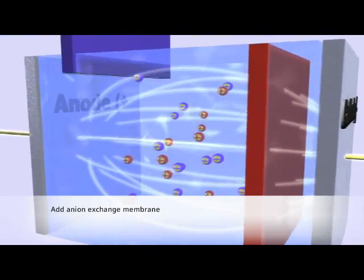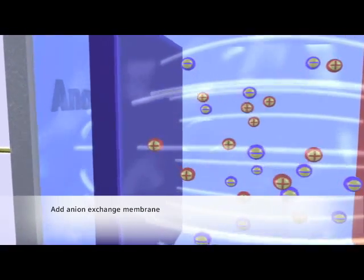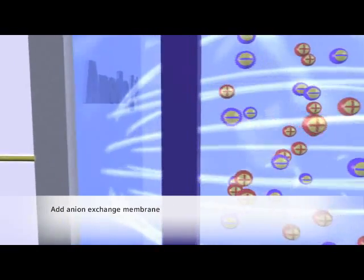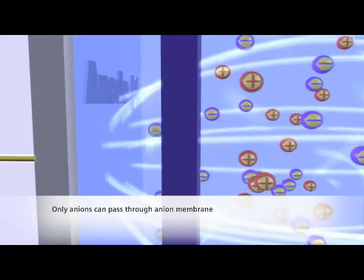When we insert another ion-exchange membrane, this time made out of anion-selective resins, it will block the flow of cations and water molecules. Only anions will be able to pass through to the other side.